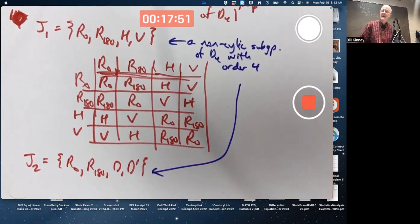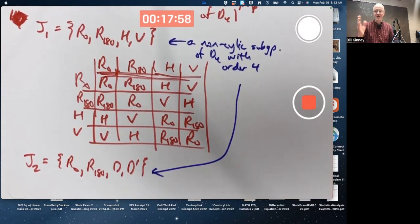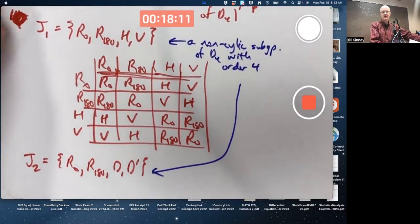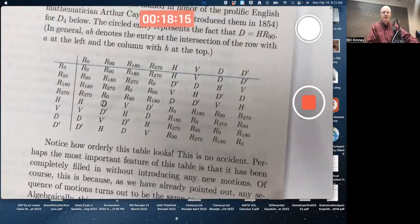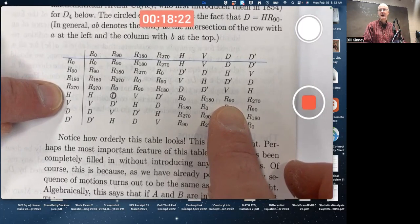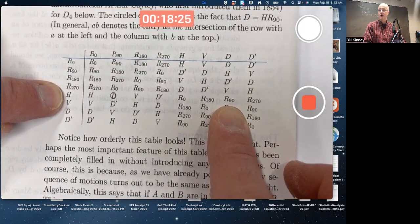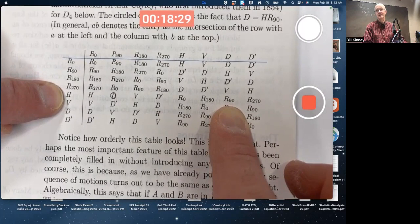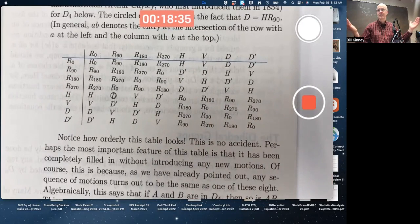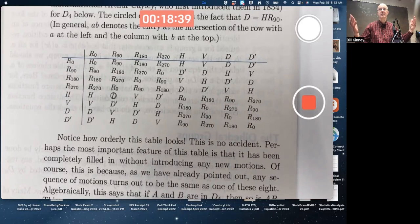Are we done? Are there any more non-cyclic subgroups of D4 that have order 4? D4 has order 8. We're talking about subgroups of order 4. No, there aren't. Because if you try mixing H's with D's, for example, or V with D, what I mentioned a few minutes ago is a problem as far as generating a subgroup of order 4. I'll say it again. H composed D is R90. So if you try to include H and D in R0 in a subgroup of order 4, you'd also have to include R90 in there. But then you'd also have to include R90 squared, which is R180, and R90 cubed, which is R270. It would be bigger than order 4. In fact, I'm not proving it, but you could prove it's the entire group.